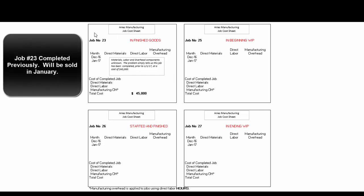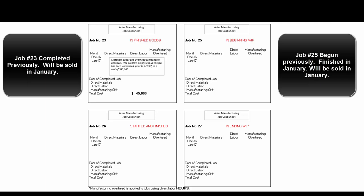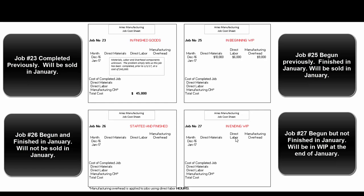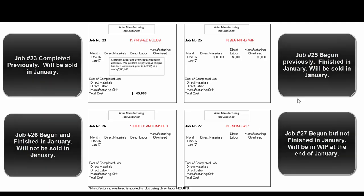It might help to keep the jobs straight by looking at the job order cost sheets. Job 23 was done previously — it's completed and sitting in finished goods inventory waiting to be sold during January. Job 25 we started in December, so there are some costs already assigned; we're going to finish it in January and sell it. Job 26 we start and finish during January but don't sell — it sits in finished goods at month end. Job 27 we start but don't finish, so its costs end up in ending work in process.